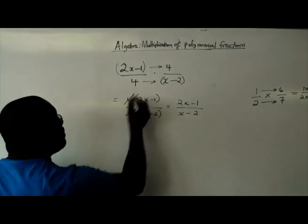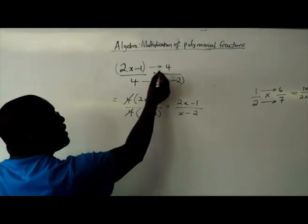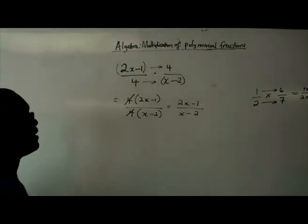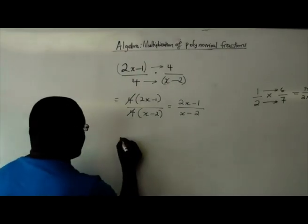Or you could have simply just cancelled out because there's a multiplication. So you can cancel across a multiplication sign. Right. Let's do another question.